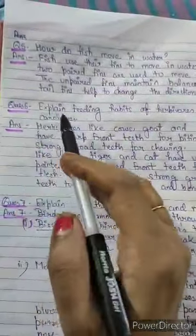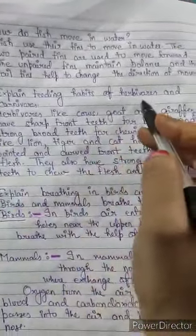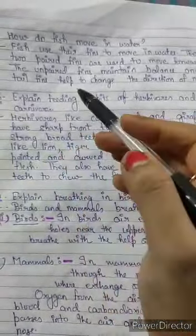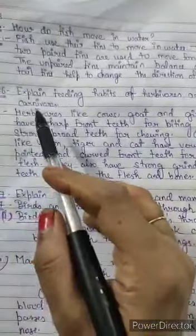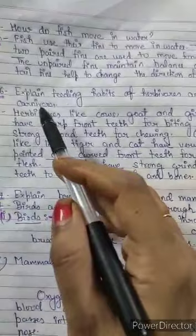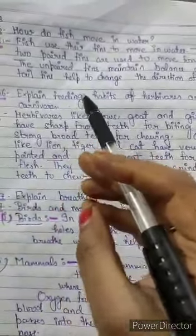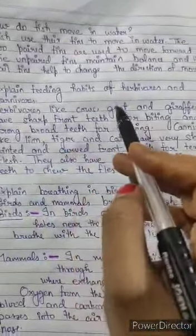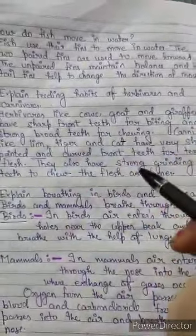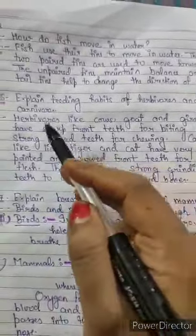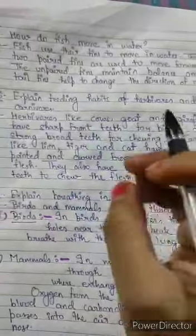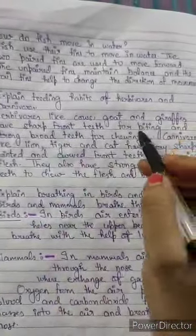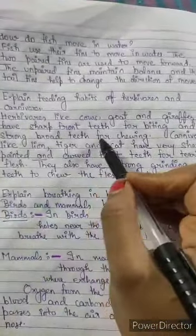Question 6: Explain the feeding habits of herbivores and carnivores. Herbivores are animals that eat plants, grasses, twigs, and branches. Examples include cows, goats, and giraffes. Herbivores have sharp front teeth for biting leaves, branches, and twigs, and strong broad back teeth for chewing.